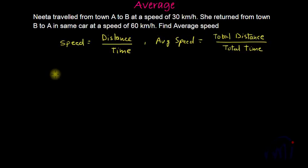So what people usually do is they add the speeds and they divide by 2. So this will be 90 by 2 which is 45. But this is not the correct way of finding the average speed.